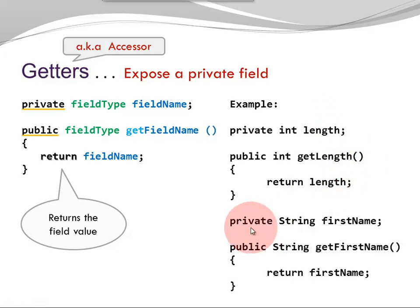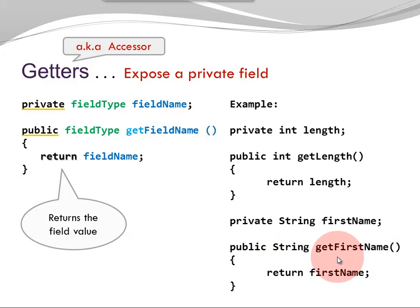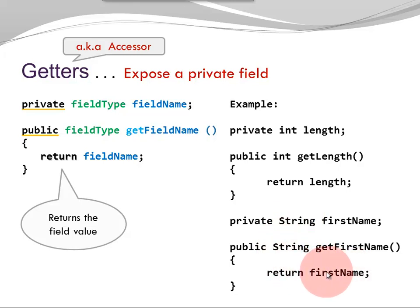Here is a second example. 'private String firstName' is the field. Here we have 'public String getFirstName' as a getter. It exposes the field and allows other classes to read the value of firstName. Once again, the return type and the field type match. I'm returning the field. There is no parameter.